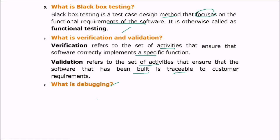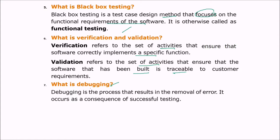What is debugging? Debugging is the process that results in the removal of an error. It occurs as a consequence of successful testing. Common debugging approaches include brute force, cause elimination, and others.